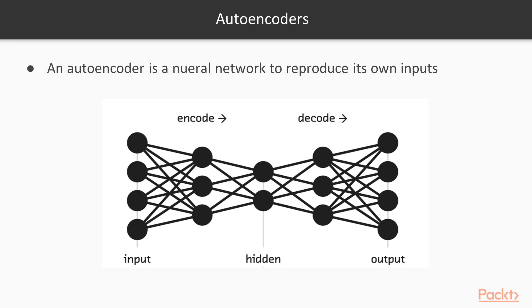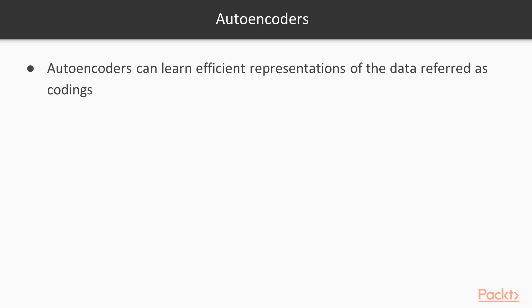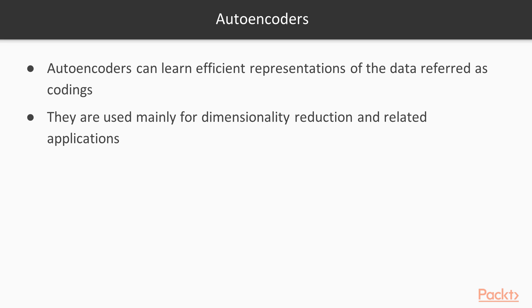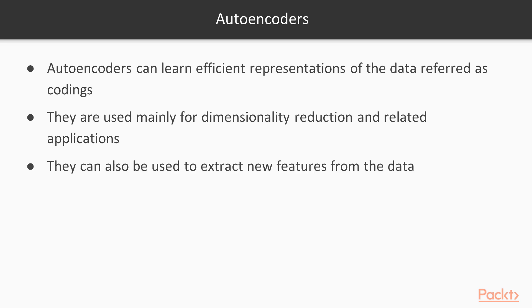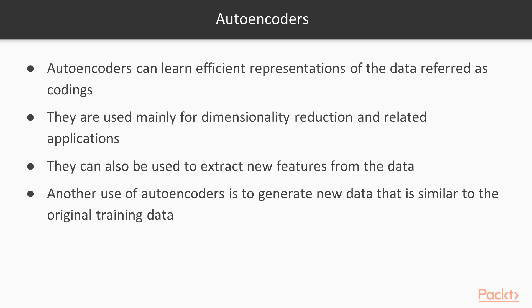The goal of this process is to produce what are called codings — an efficient way of containing the information present in the inputs. Autoencoders can learn efficient representations of data, referred to as codings, and that is what we want from the autoencoder. They are used mainly for dimensionality reduction and related applications, and can also be used to extract new features from data.